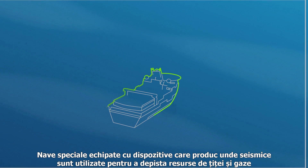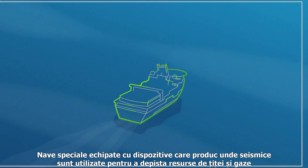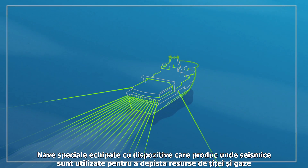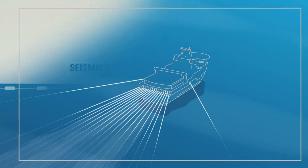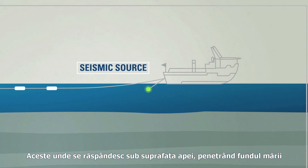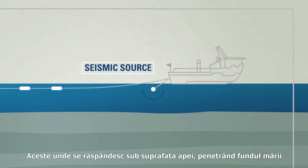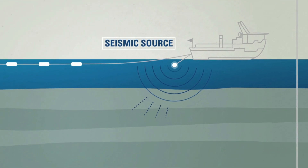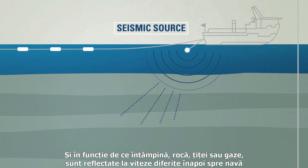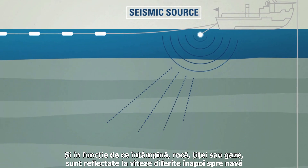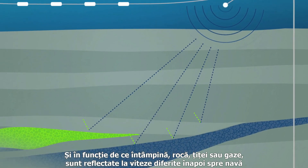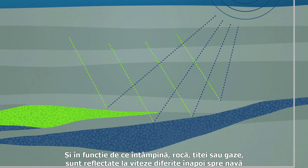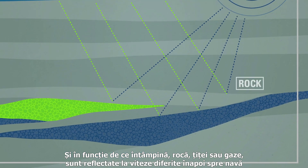Special ships fitted with equipment that produces seismic waves are used to locate oil and gas. These waves fan out below the surface of the water, penetrating the seabed below, and depending on what they hit — rock, oil, or gas — they are reflected at different speeds back up towards the ship.